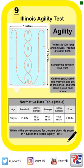I'd like you to read the question at the bottom of the page and compare Jerome's 18.6 seconds, scored in his Illinois Agility Test, to the normative data in order to work out his rating for agility. Before you pause the video, make sure you highlight any important information within the question or the table. Pause your video now, and when you're ready, press play to check your answer.